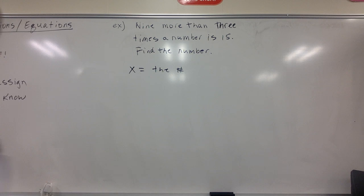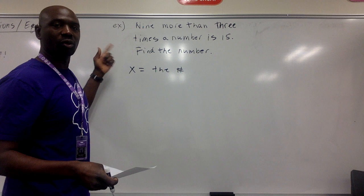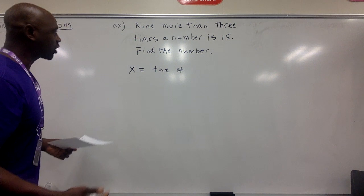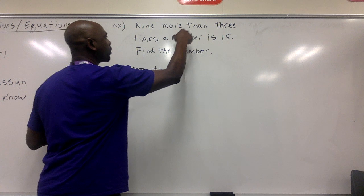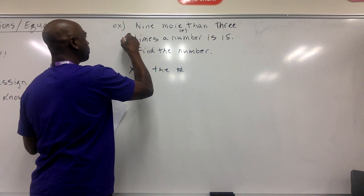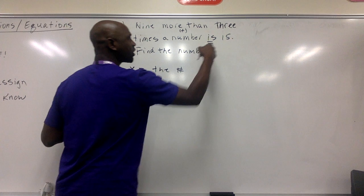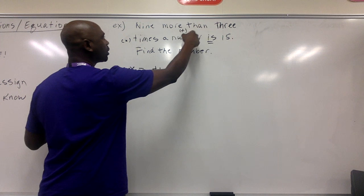After assigning the variable, we check for more than one unknown — but we only have one here. Now let's write an expression or equation. A few things jump out: 'more than' implies addition, 'three times' implies multiplication, and 'is' implies equals. So this is going to be an equation.